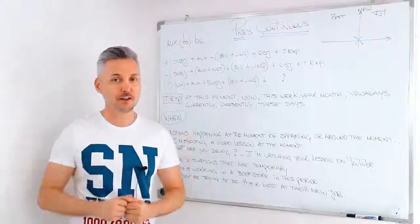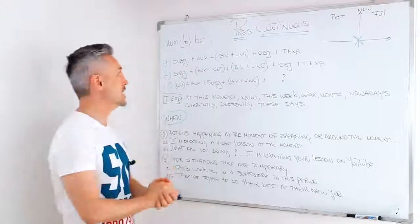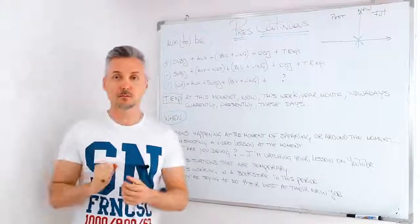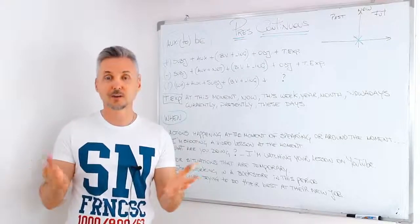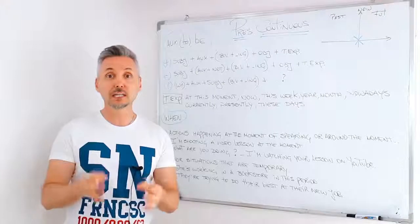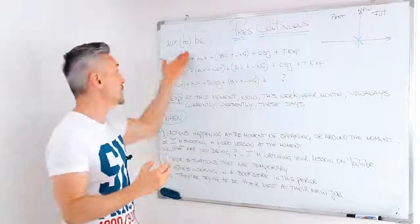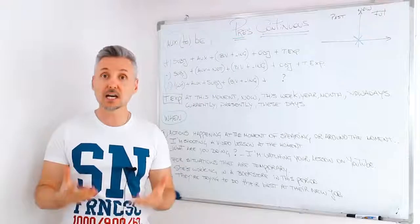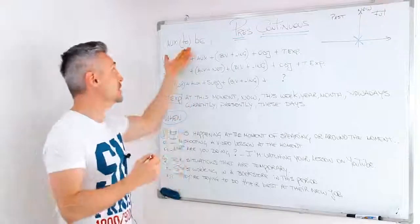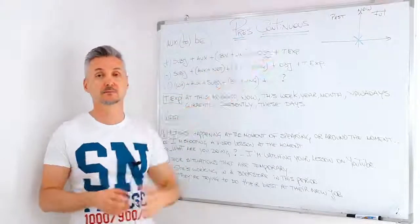So we're going to talk about the present continuous. Now, an important thing that I need to tell you: you need to know how to conjugate the verb 'to be'. Why? Because it's the auxiliary verb for this tense.